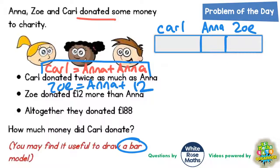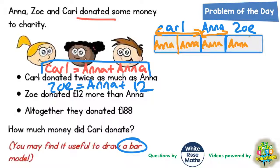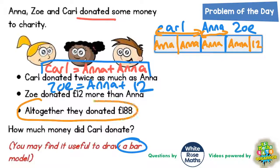When we look further, Carl is basically the same as Anna plus Anna again. So Carl's section we can actually split into Anna's plus Anna's again. Obviously Anna's amount is Anna's amount, and Zoe's amount is the same as Anna's plus an extra £12. So we've got Carl as two lots of Anna, Anna as Anna, and Zoe as Anna plus £12.